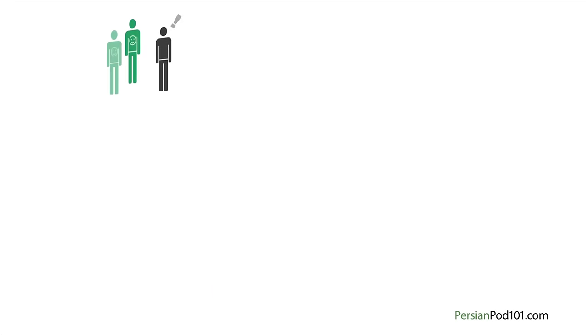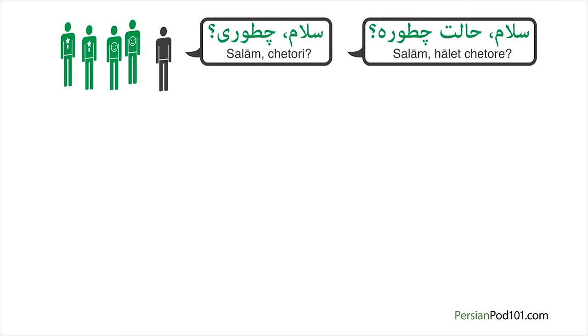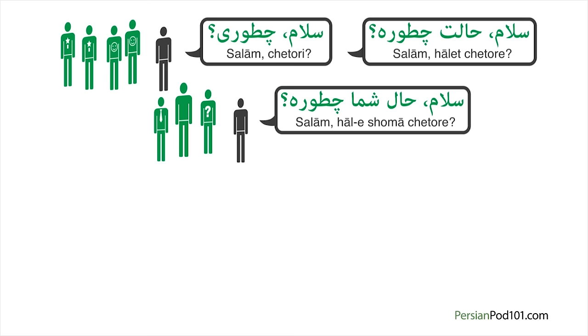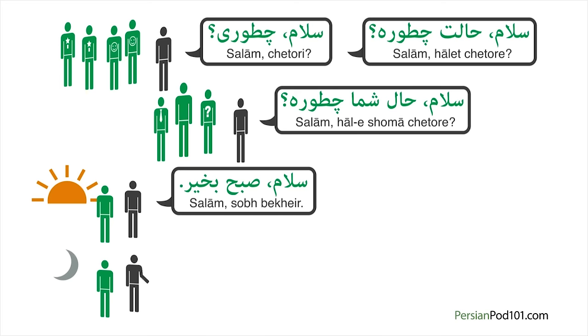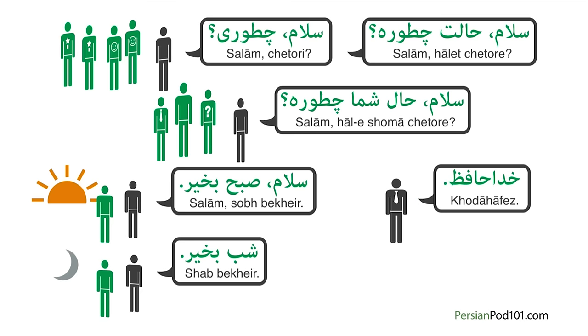Now you have learned many different ways to greet people in Persian. Let's review them all. When meeting friends or relatives: Salam, chetori. Salam, halet chetore. When meeting a stranger, someone older, or someone we don't know well: Salam, hale shoma chetore. To say good morning: Salam, sobh bekhayr. To say good night: Shab bekhayr. When leaving in a formal situation: Khodahafez. When leaving in an informal situation: Khodahafez.